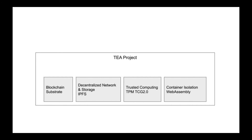Secondly, IPFS — the InterPlanetary File System — is used in our network and storage layer. We choose IPFS because it's a mature distributed storage solution with considerable community support. One of the TEA project's use cases is to add computing functionality to existing IPFS nodes. LibP2P, the network layer of IPFS, is the base layer of our delegation chain network.